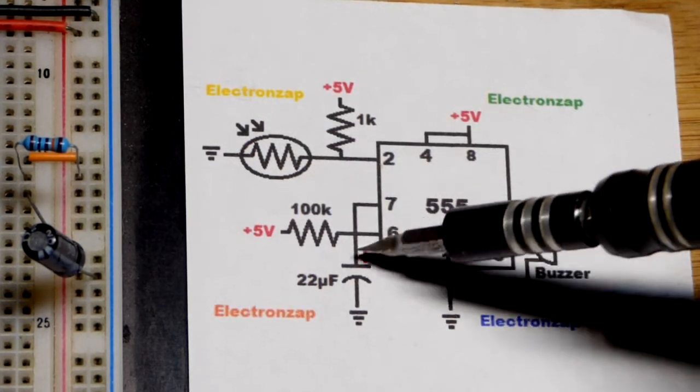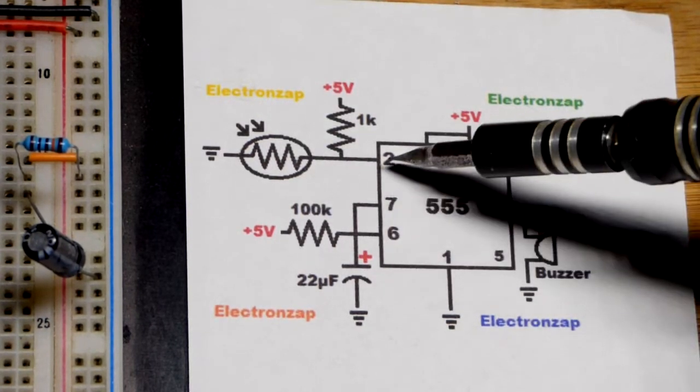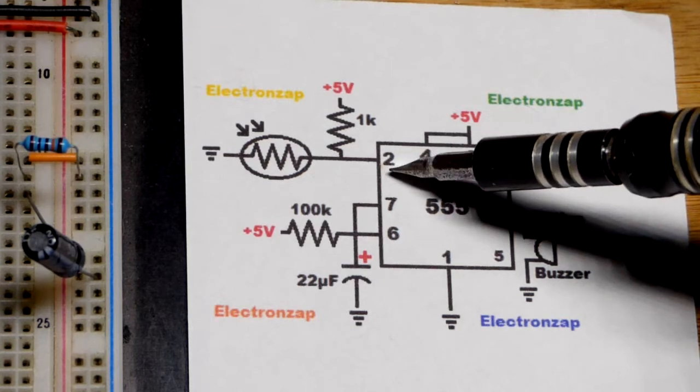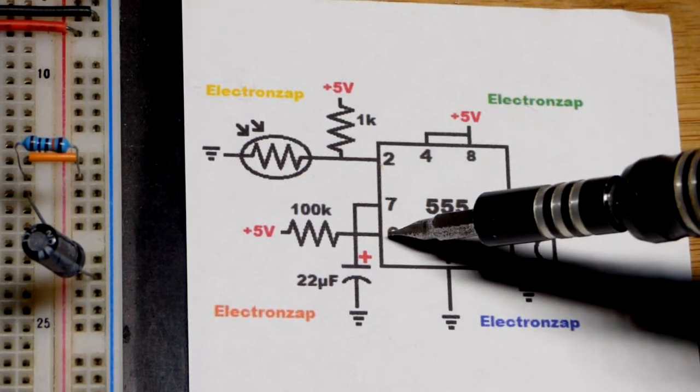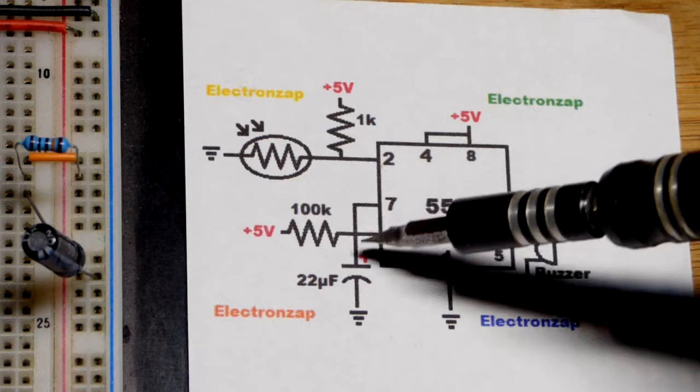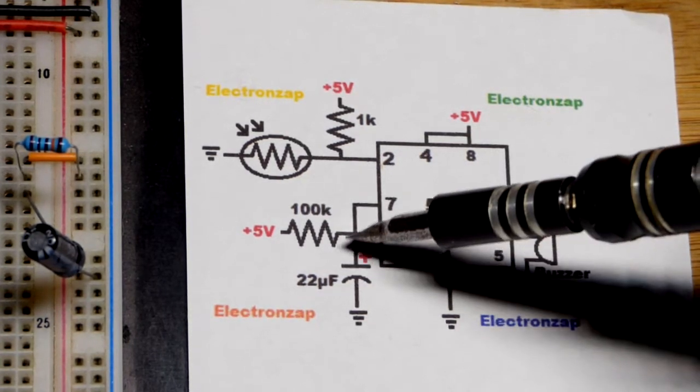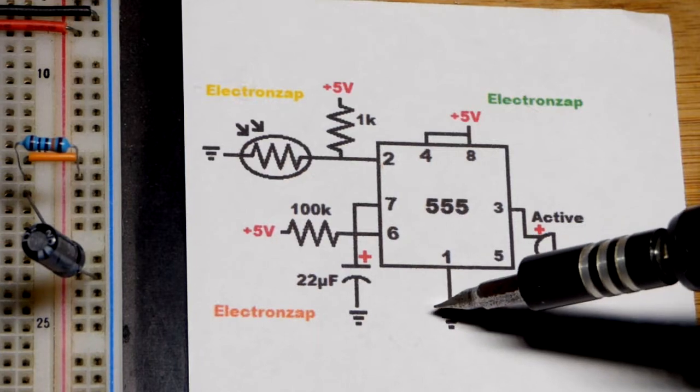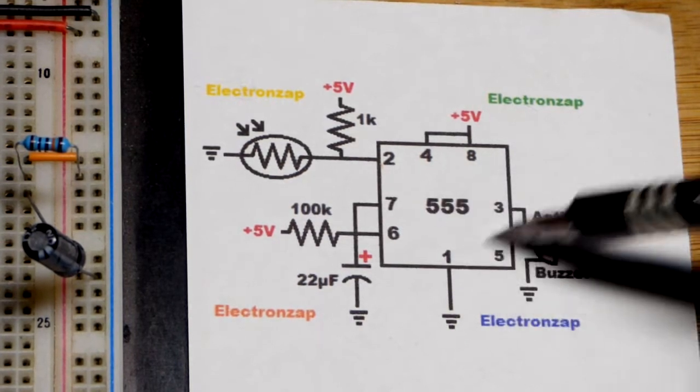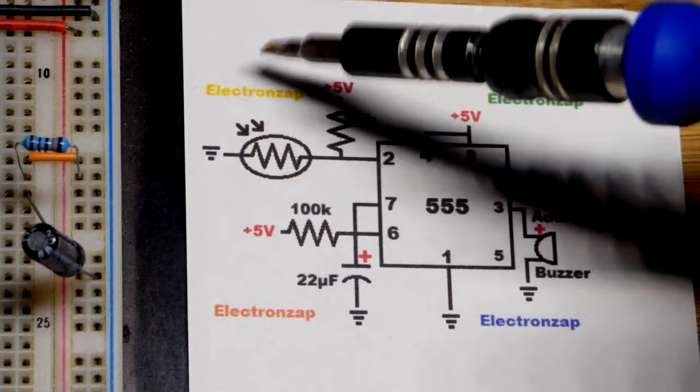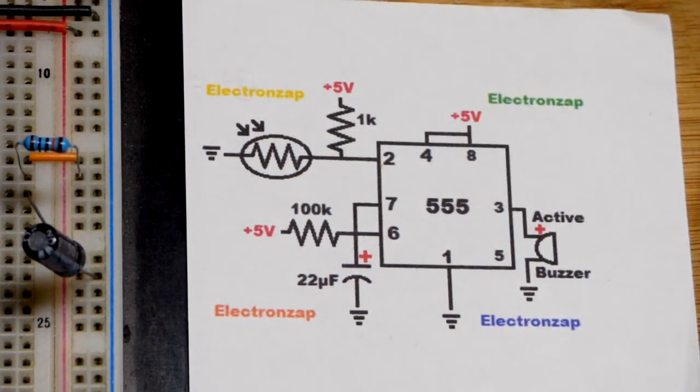As soon as we remove the light, pin 6 will see above two-thirds supply voltage and pin 2 will not see below one-third supply voltage. Then pin 6 will kick in and will set pin 7 directly to ground, same with the output. Capacitor will discharge instantly so we can start the process as soon as everything drops low.